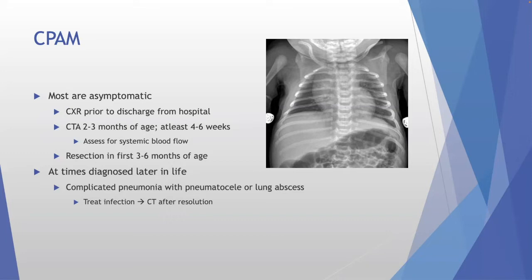The CT needs to be a quality study with IV contrast to evaluate vasculature and detect any systemic blood flow — this is essential for operative planning. Resections are typically done within the first three to six months of age — shifted earlier than before. With improved thoracoscopic instruments and techniques in neonates, we operate earlier and see less inflammation. Even without clinical infection, there is more inflammation at operation when done later.